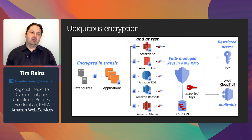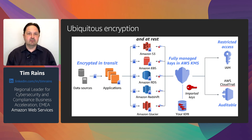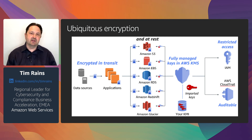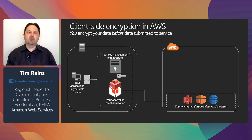The model we are working towards is ubiquitous encryption, where customer data is always protected in transit and at rest using encryption. Access to data is restricted using identity and access management, and all operations are auditable through API log entries in AWS CloudTrail. Let's look at this in more detail, focusing on protecting data at rest using AES 256-bit encryption and the range of key management options customers have.